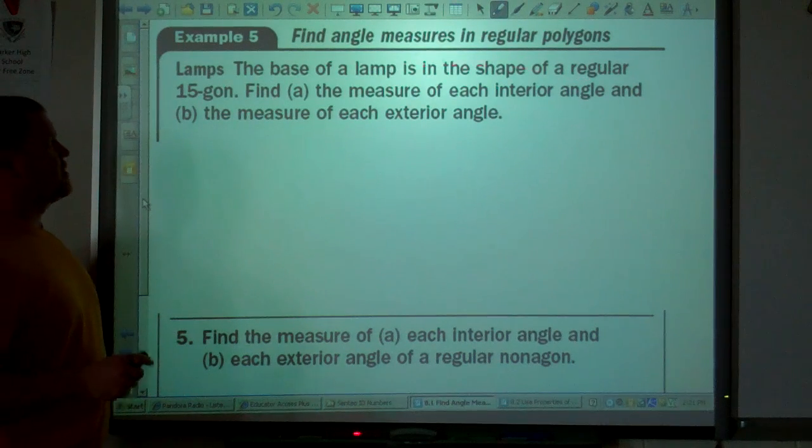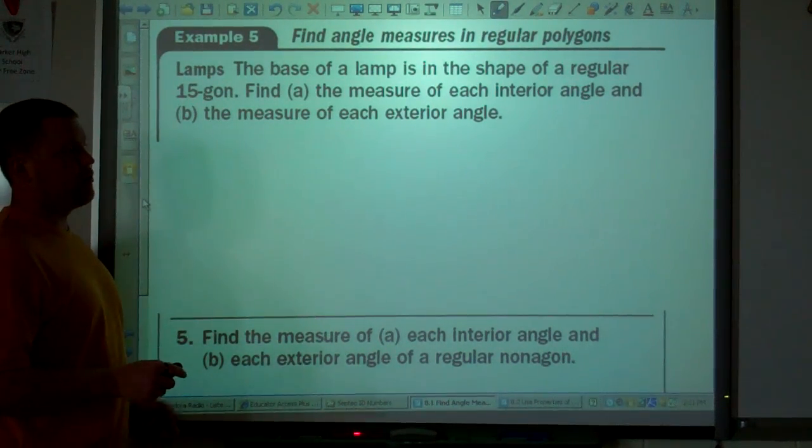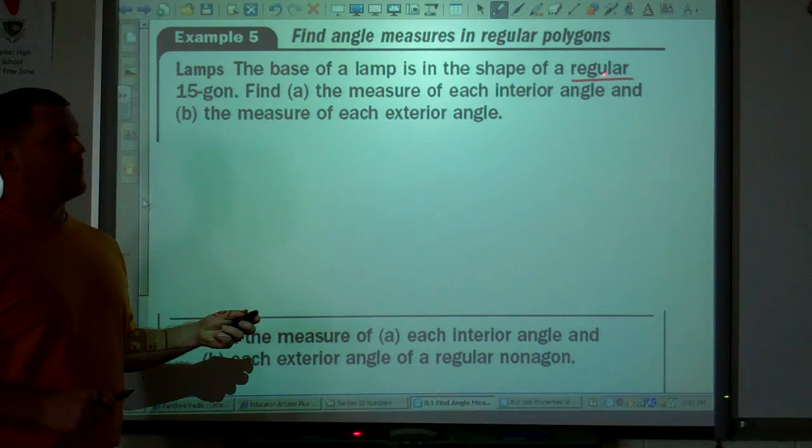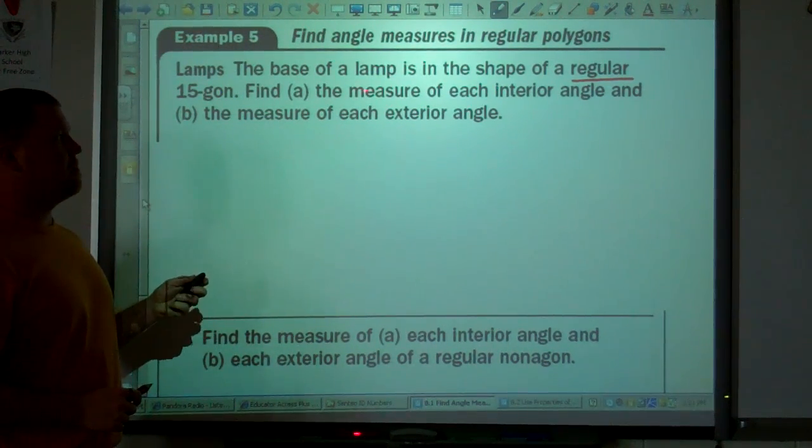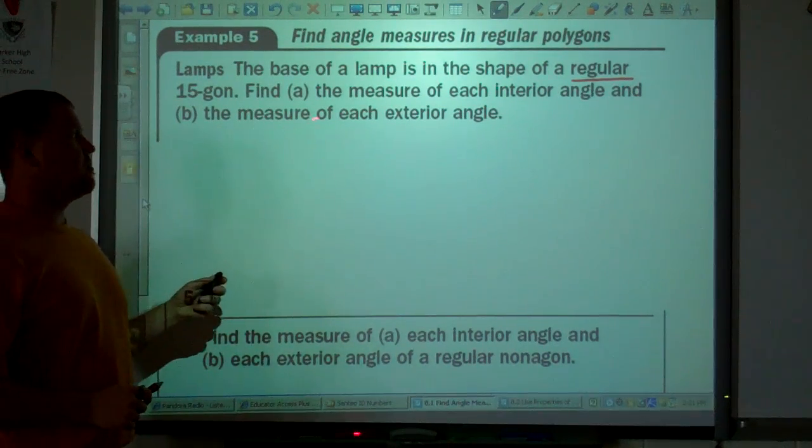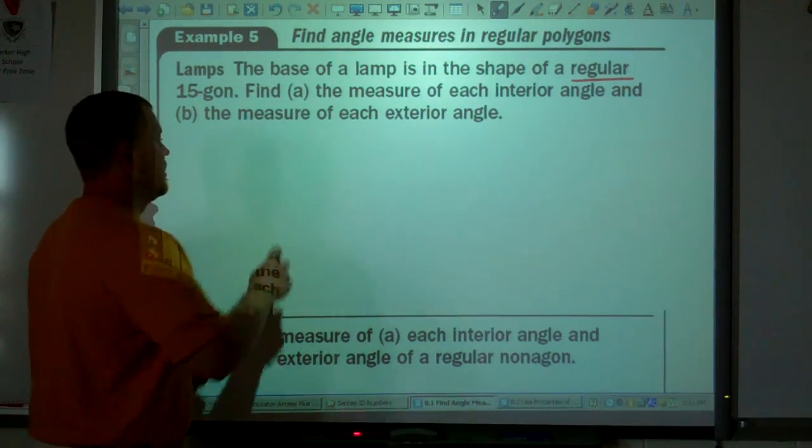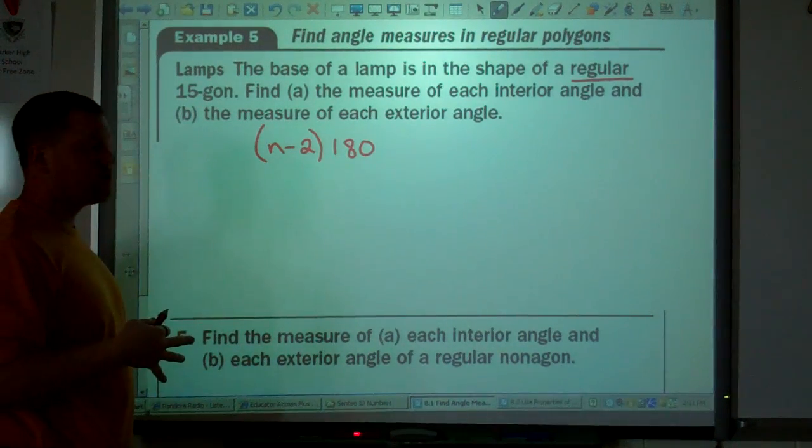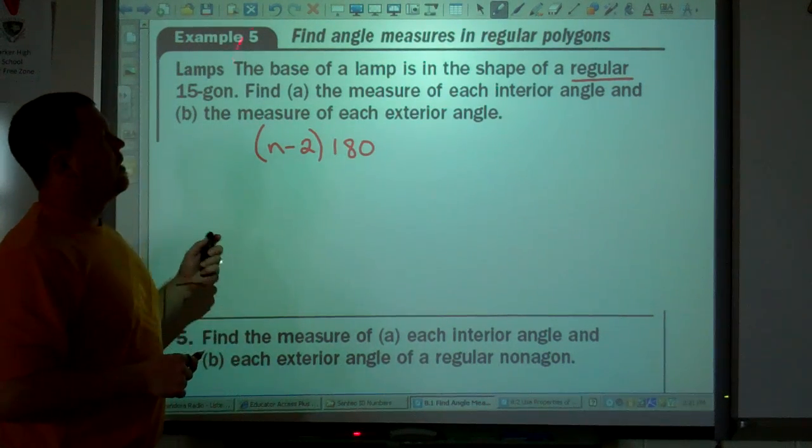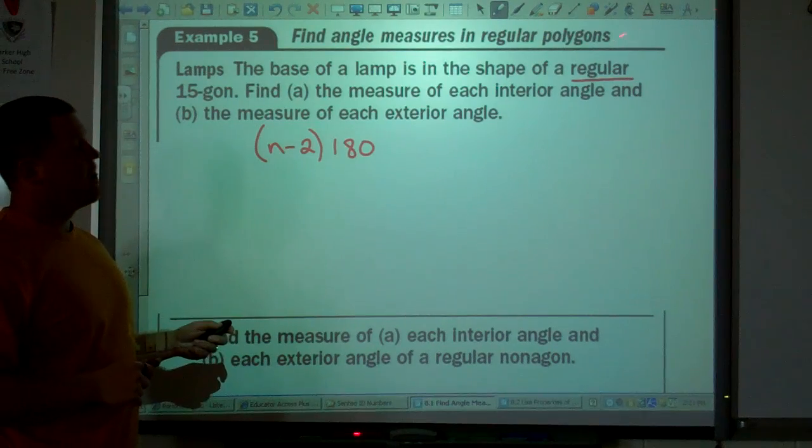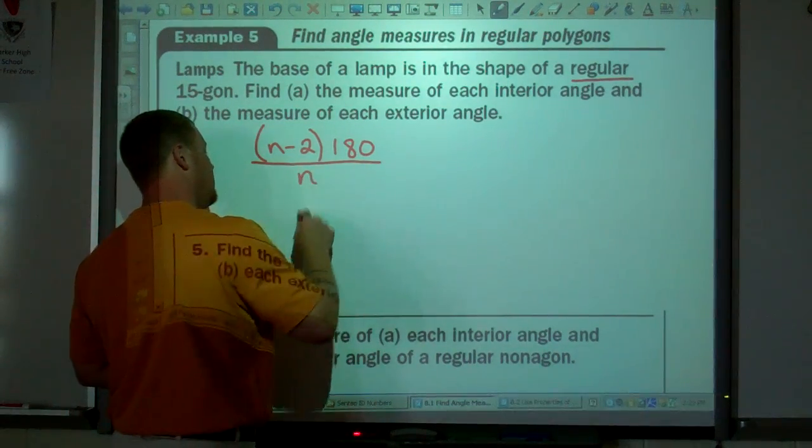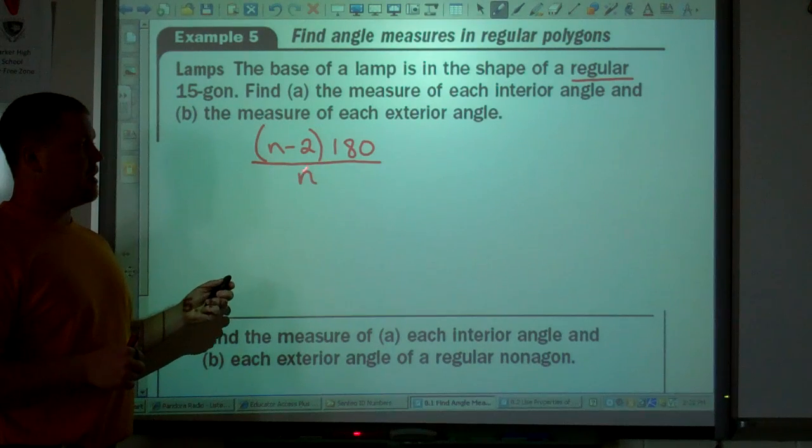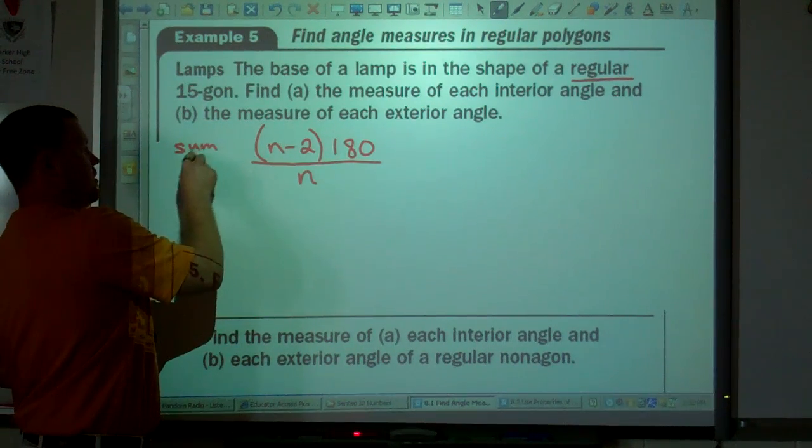The base of a lamp is in the shape of a regular 15-gon. Everyone remember what the term regular means. Prior knowledge, regular. It's equilateral and equiangular. And it's a 15-gon. Find the measure of each interior angle and find the measure of each exterior angle. So if we think about this, this equation n minus 2 times 180 gave us the sum of the interior angle measures, right? Now, this is regular, which means all the angles are the same. So if we take and divide by n, which is the number of sides, and the number of sides and the number of angles is the same.